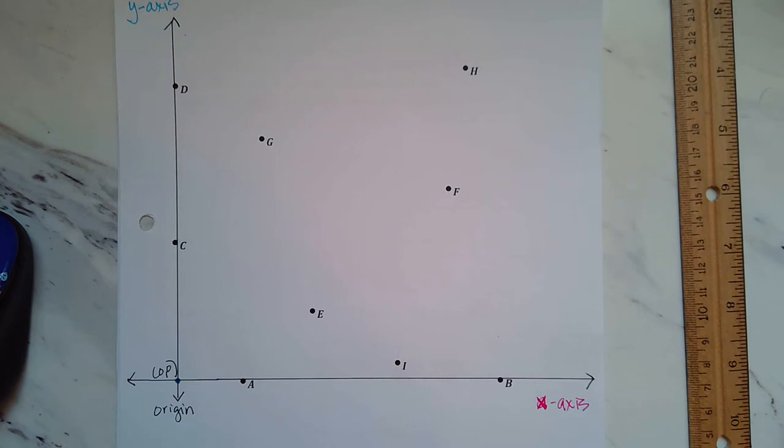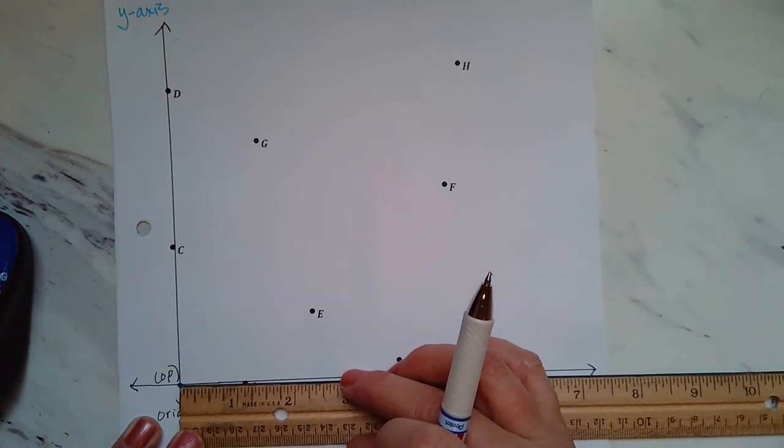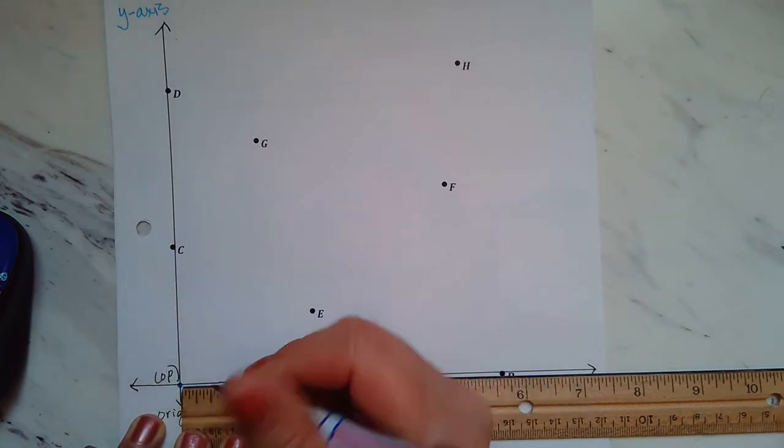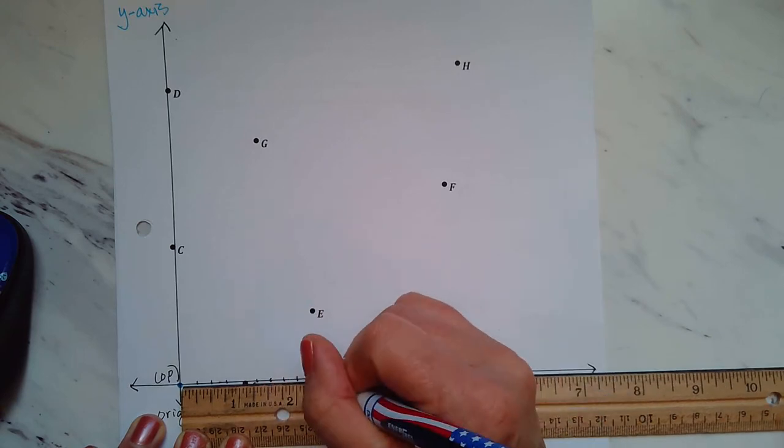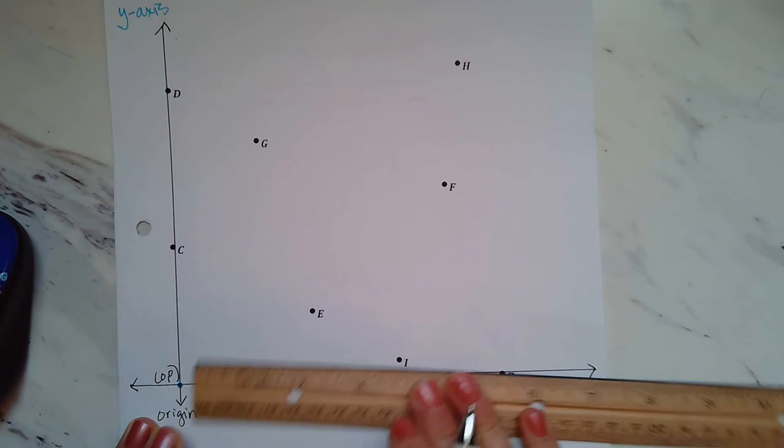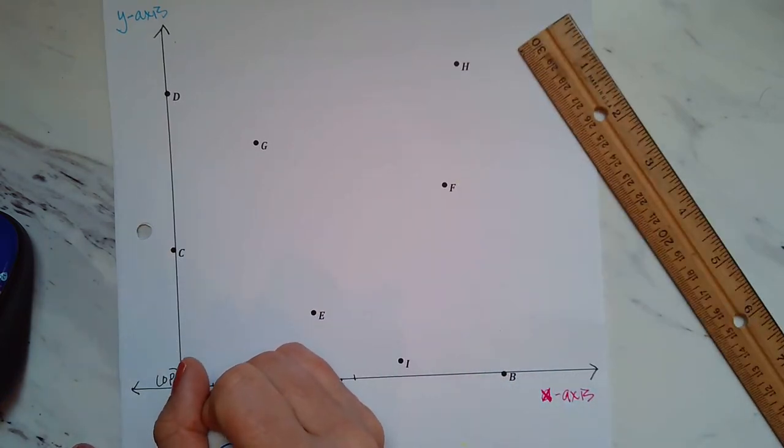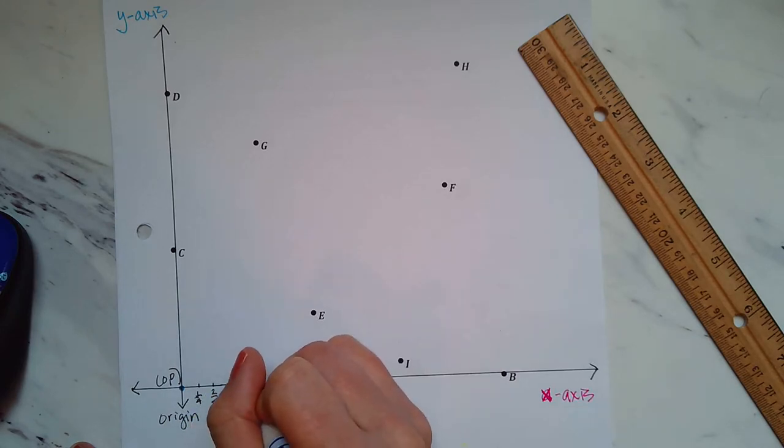On our number line, we need to go through and actually label our number line, our x-axis and our y-axis. What we're going to do is on the x-axis we are going to label the whole numbers only. The length of one square on the grid represents one-fourth. So if you want to take your ruler and mark fourths all the way across, if this is zero-fourths, this is one-fourth, two-fourths, three-fourths. This is four over four, but it's one.